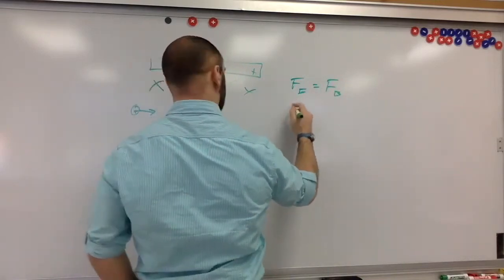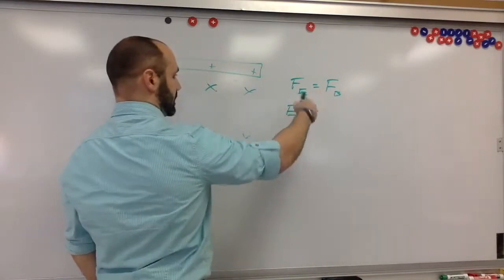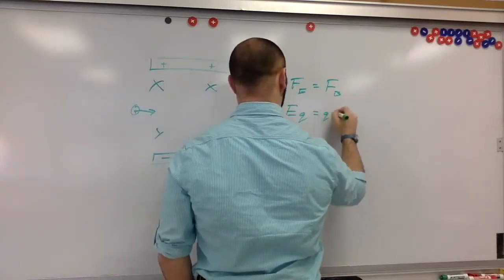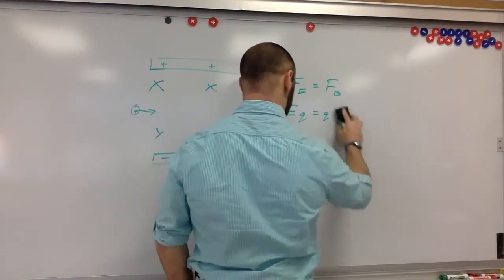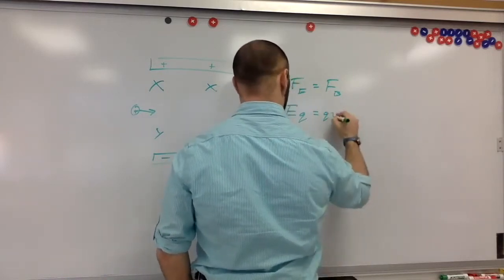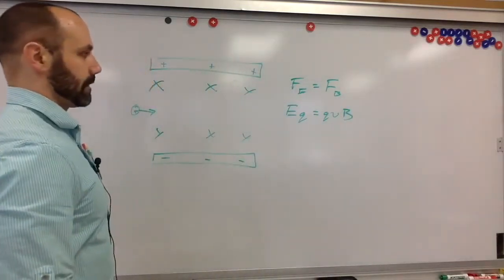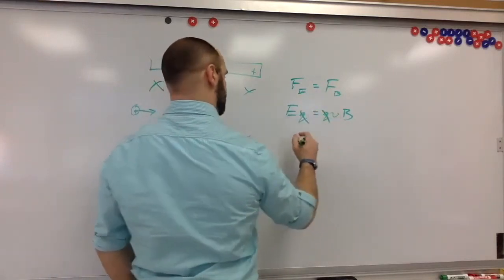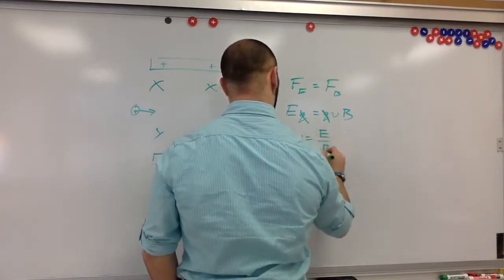And so this is given by E times Q, E times the charge. And then the force from the magnetic field is Q times V, QB, sorry, QVB. QV cross B, but these are 90 degrees. Okay, and so then these cancel out. Then I want V to be equal to E over B.